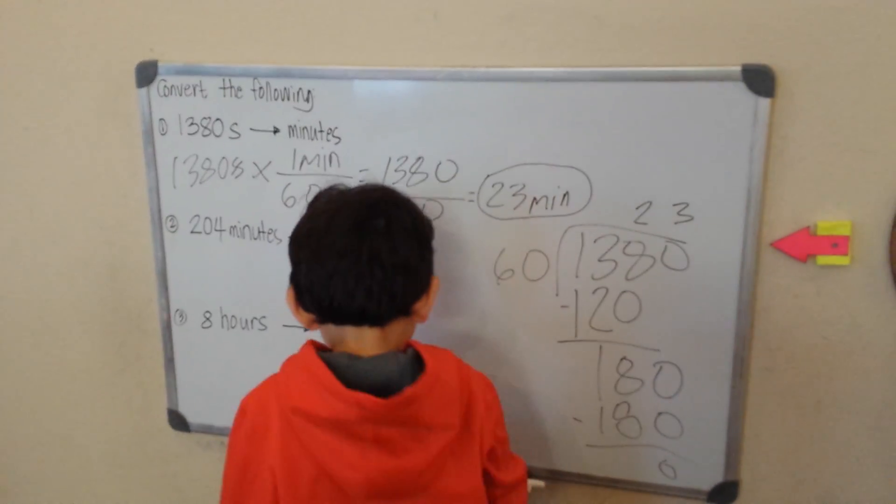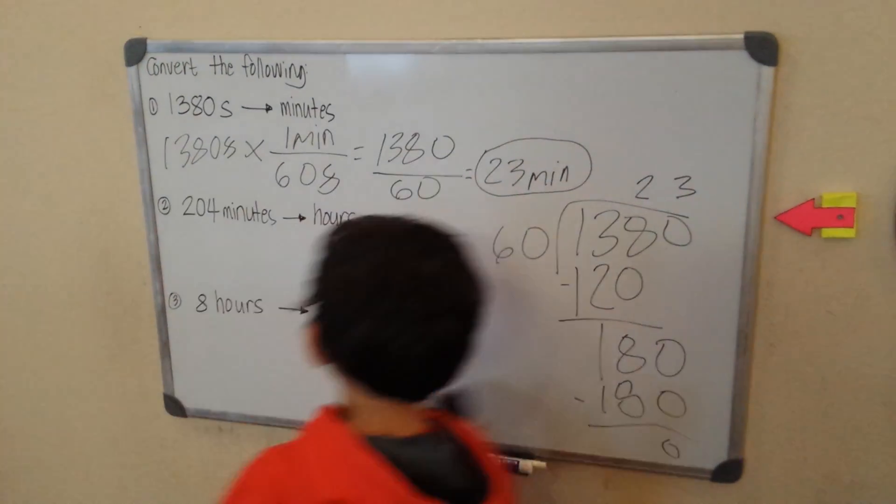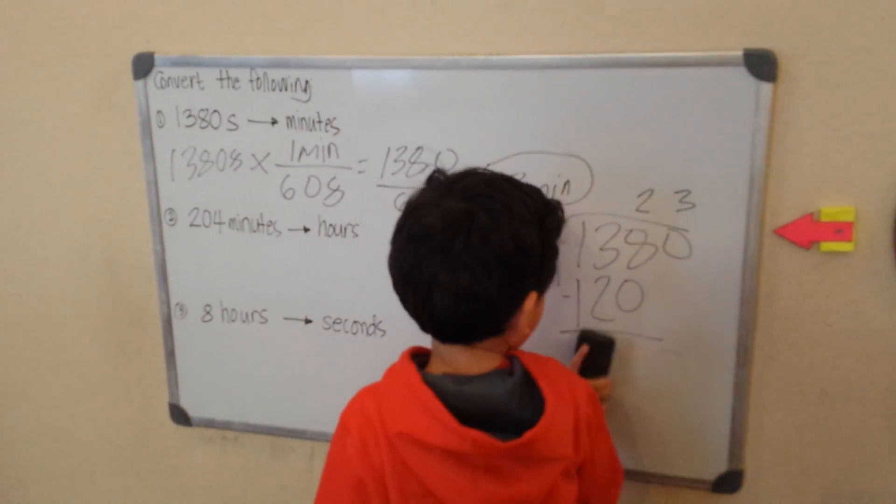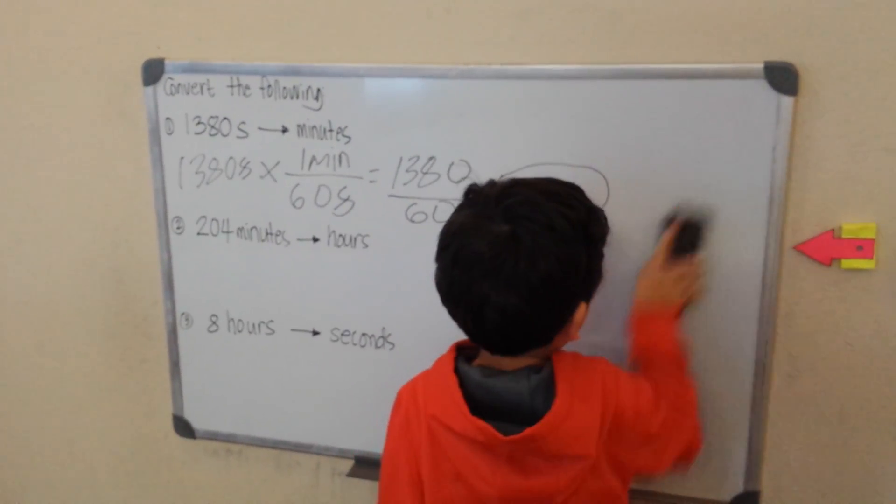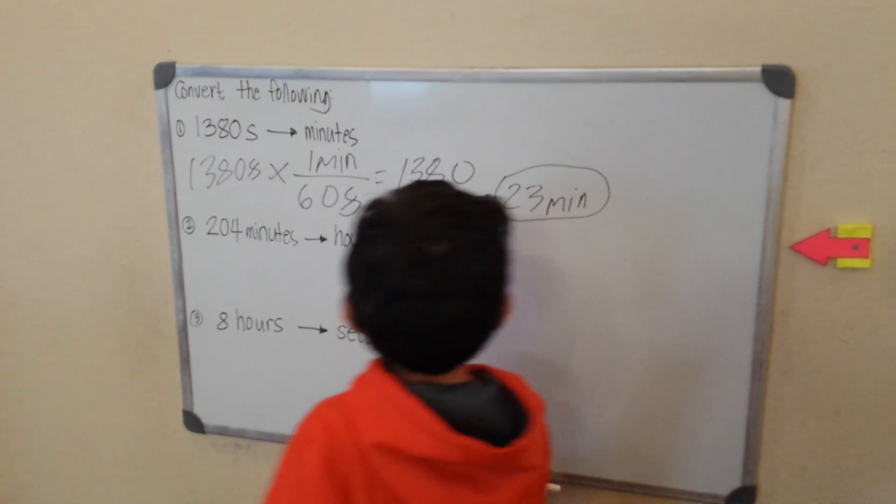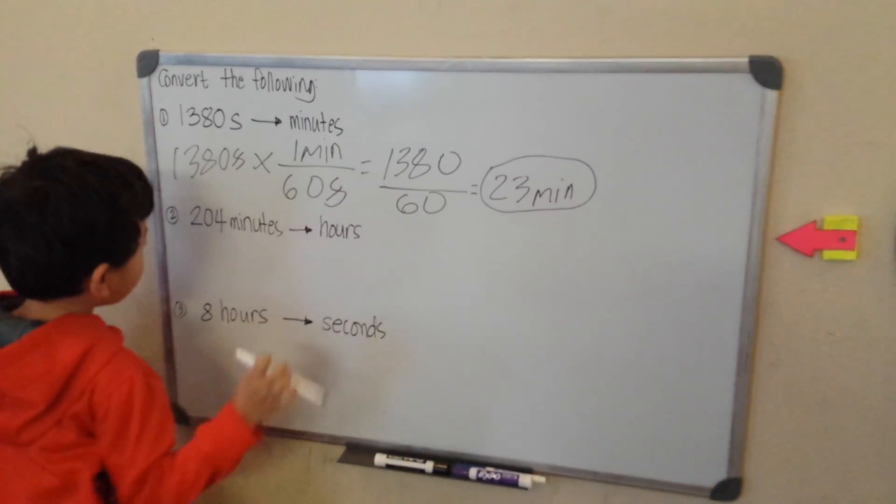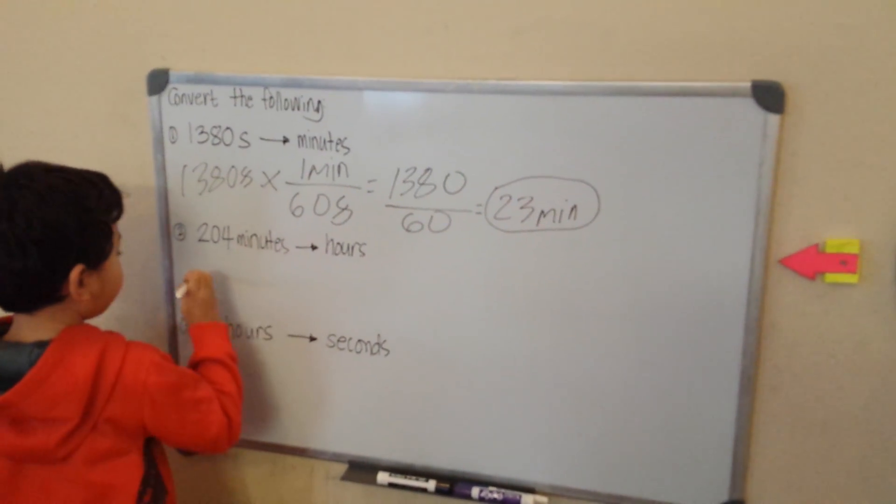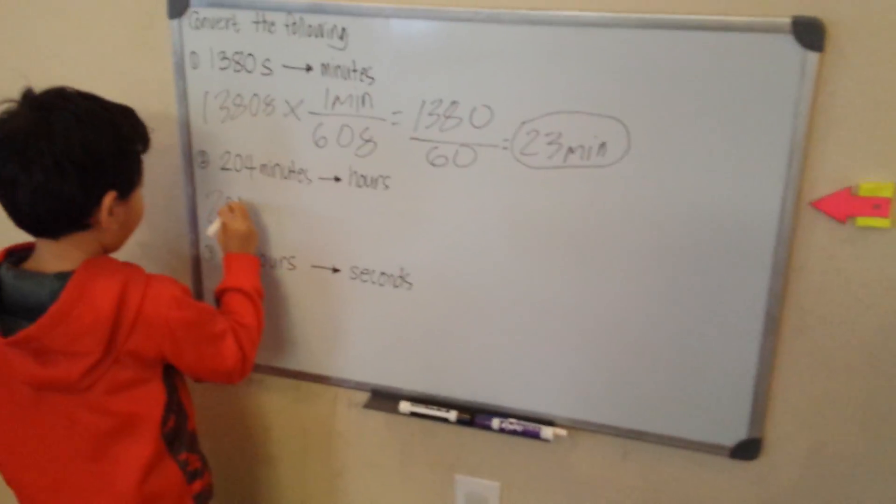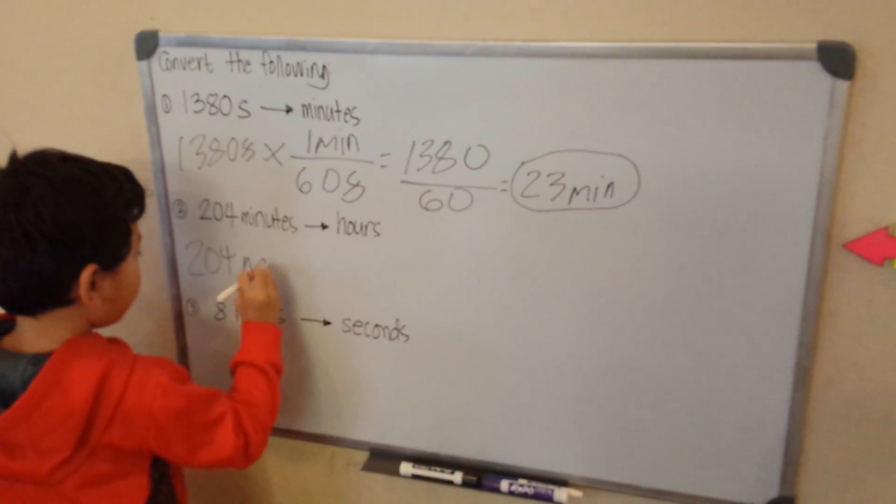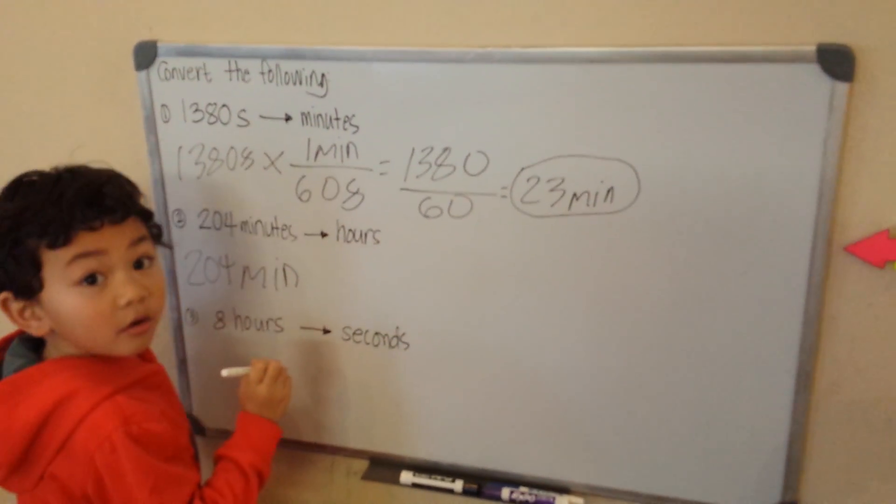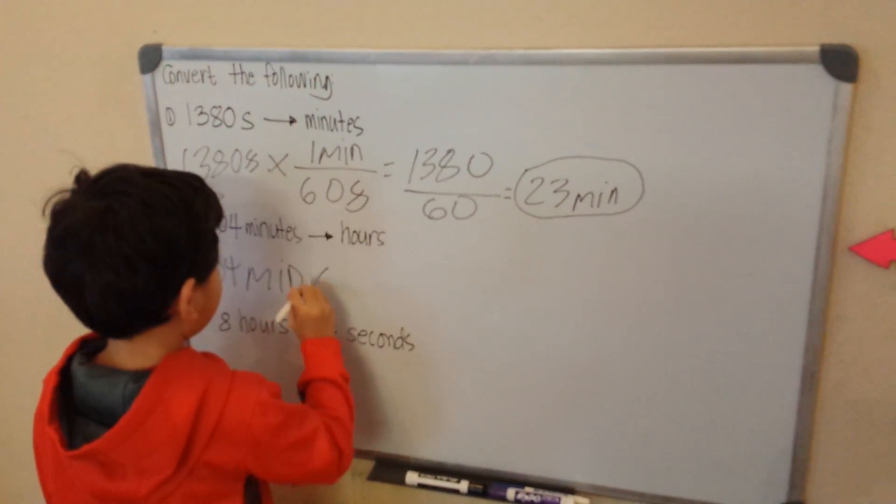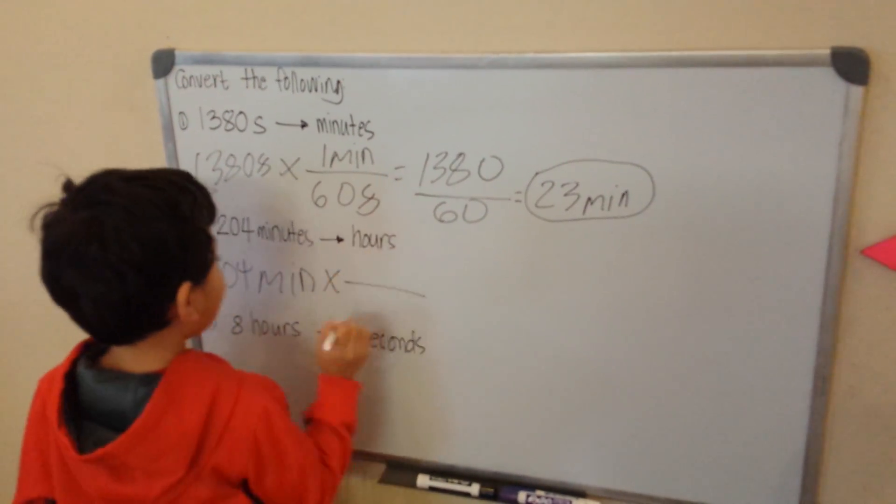23 minutes has 1,380 seconds, but we're actually converting it. So, now what are we going to do? 204 minutes is converted to hours. I can go on.